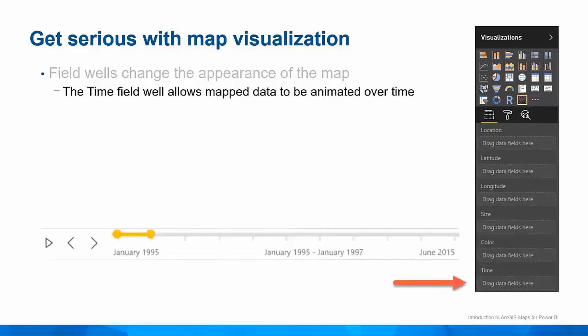You can create time animations using the Time field well. If you put a date field into the Time field well, the map visual will group your location data into time bins and add a time slider to the visual. You can manually scrub forward and backward through time, use the handles to expand the range and show multiple bins at one time, or use the play button to animate your selection over time.